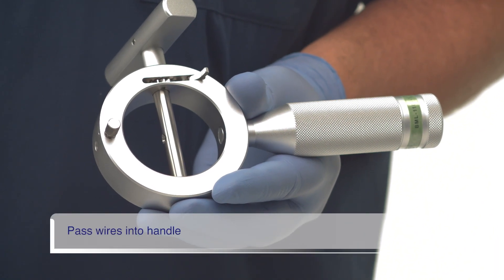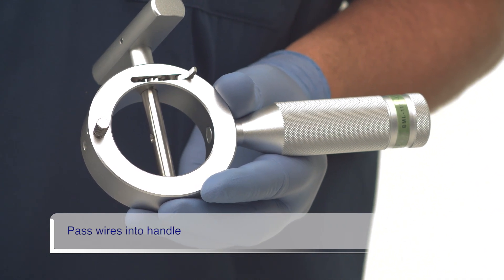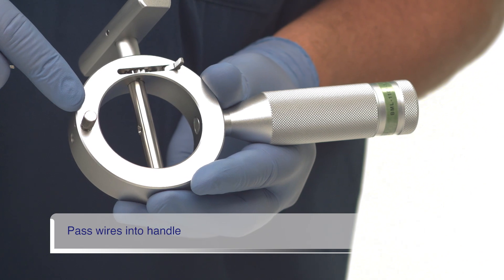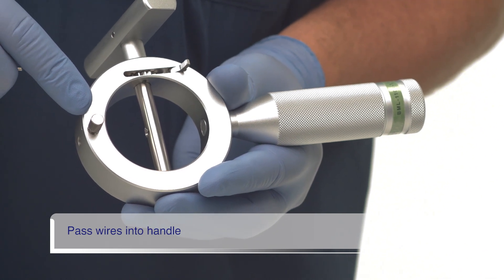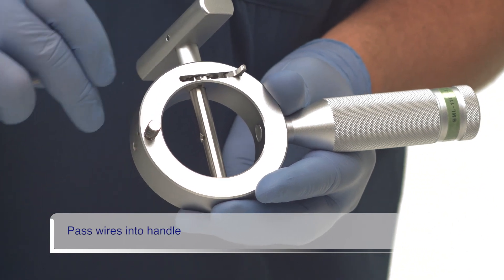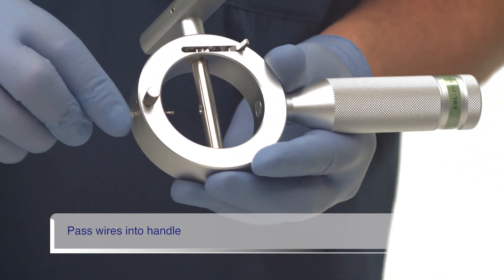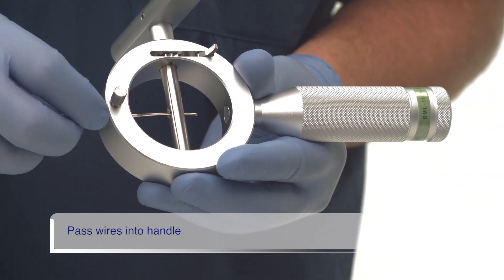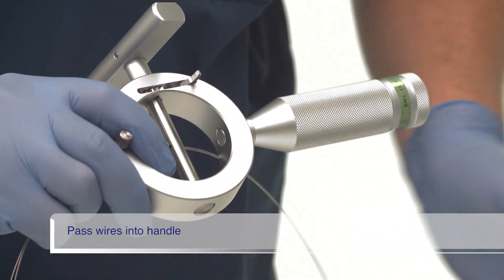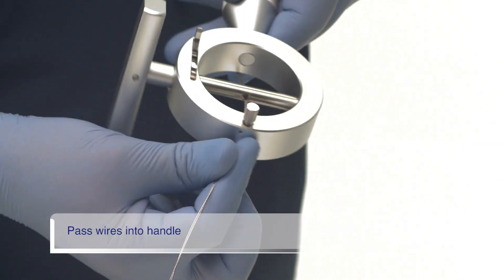We will now load the wires into the emergency lithotriptor handle. Note that the emergency handle has two locks. One is a thumb screw that secures the coil sheath, and the second is the ratchet lock which we tested earlier. The wires are passed through the hole at the top of the handle and through the hole at the center of the T-piece.